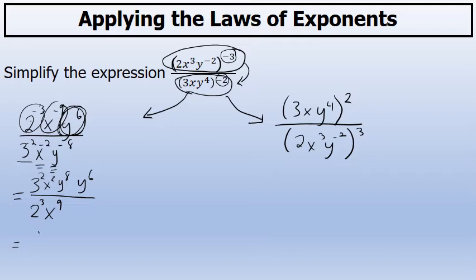First, in the numerator, three squared is nine. And y to the eighth times y to the sixth — when you multiply the same base, you add the exponents — so that becomes y to the power of 14. And in the denominator, two to the third power is eight, times x to the ninth.